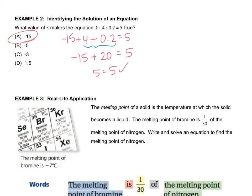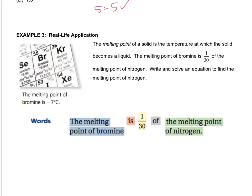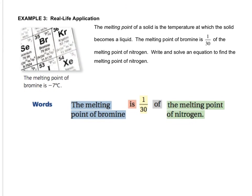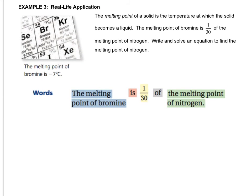When you're ready, let's move on to the last example, example three. The melting point of a solid is the temperature at which the solid becomes a liquid. The melting point of bromine is 1 30th of the melting point of nitrogen. Write and solve an equation to find the melting point of nitrogen.